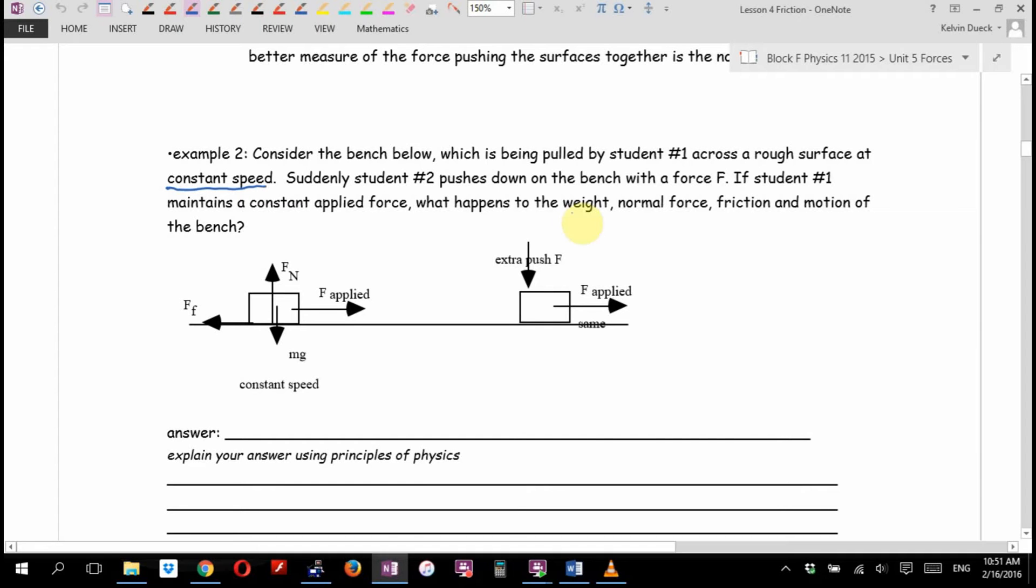Suddenly, a second student pushes down on the bench with a force F, like in this picture. Or suddenly your idiot friend comes running along, jumps up, and lands on the bench, thinking that's going to be really funny. What's going to happen to the bench if student number one is still applying the same force? What's going to happen if you're sliding it at a constant speed, and someone comes along and sits on the bench? It's going to stop. Why? You know what? Let's look at this in detail. When I say weight, what do I really mean? Which force are we talking about whenever I say weight? Mg. Does Mg, does the mass of the bench physically change? No.